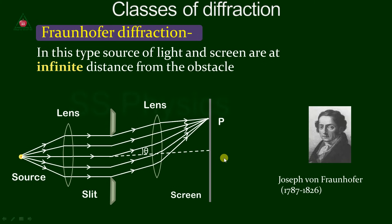It is not practically possible to keep the source at infinite distance and the screen also at infinite distance, and therefore we have to use two biconvex lenses as shown in the figure. The point source emits a spherical wavefront. That spherical wavefront is converted into a plane wavefront, which strikes the slit. The rays get diffracted upward or downward at angle theta, then converge using a biconvex lens and fall on the screen at point P. At point P you will see the resultant of all these rays — it may be brightness, darkness, or something intermediate — depending on the path difference of these rays.